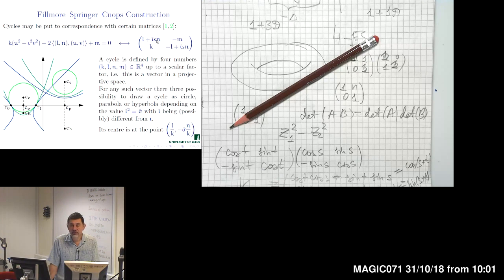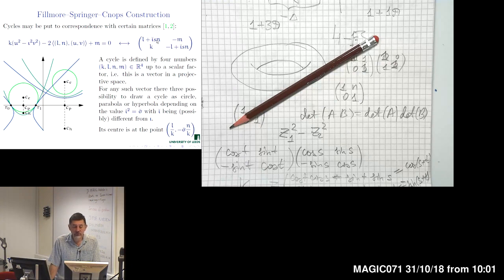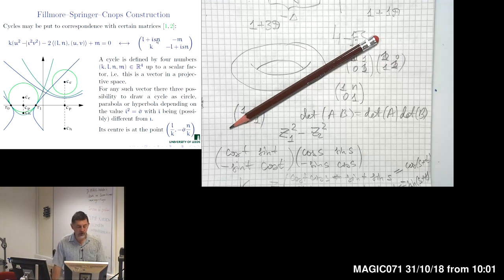Fillmore and Springer published almost simultaneously their paper, independently from Jan Cnops, and even after their work Alexander Kirillov in his book 'Two Tales about Fractals' discovered a similar representation for cycles independently. People just discover and rediscover that correspondence on many occasions, because it is really something very natural. I will try to discuss that in a separate complementary video.